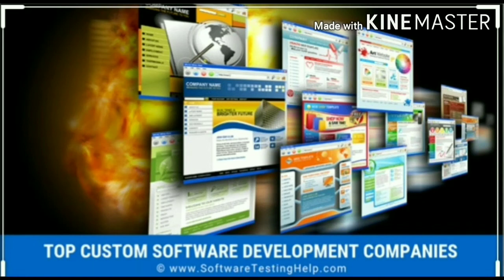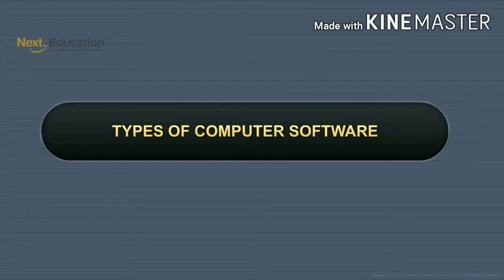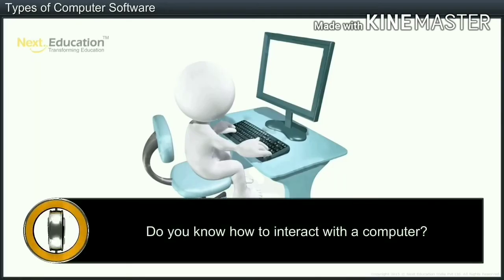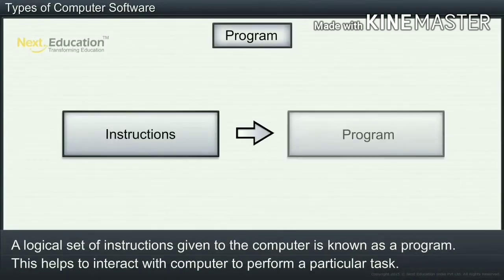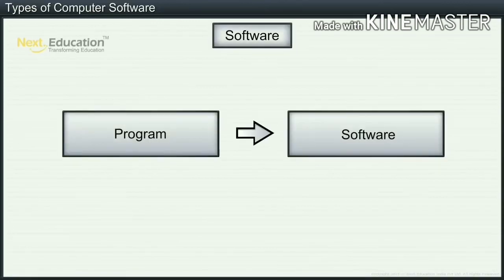Read the lesson; if you have any confusion or doubt, ask me — I will upload one more video with more information on software. In this module you will learn about different types of computer software. A logical set of instructions given to the computer is known as a program, which helps to interact with the computer to perform a particular task. A group of programs bundled based on utility directs the processor to perform specific operations.